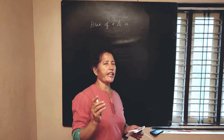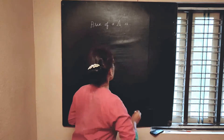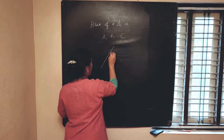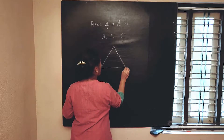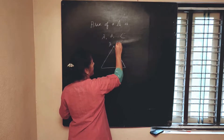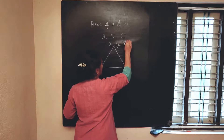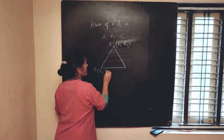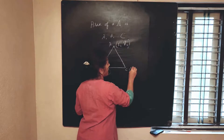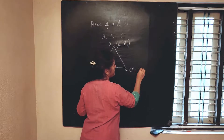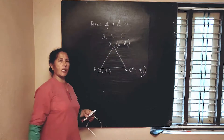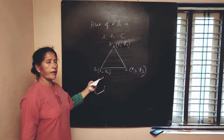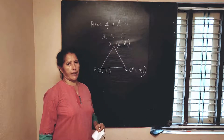To form a triangle you need at least 3 points. Let me call those 3 points as A, B, C and I will draw a triangle. If I call vertex A as (x1, y1), B as (x2, y2), C as (x3, y3), I have 3 vertices of a triangle with x1, y1, x2, y2 and x3, y3. Then what is the area of the triangle?